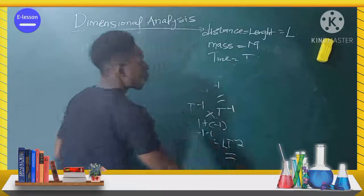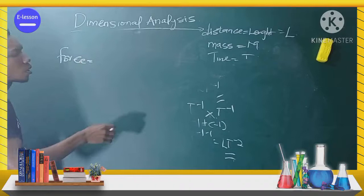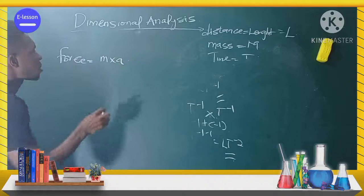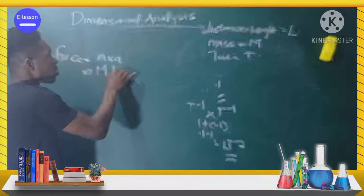Now, the dimension for force: force is mass times acceleration. The dimension for mass is M, and the dimension for acceleration is LT⁻². Therefore, the dimension for force is MLT⁻².